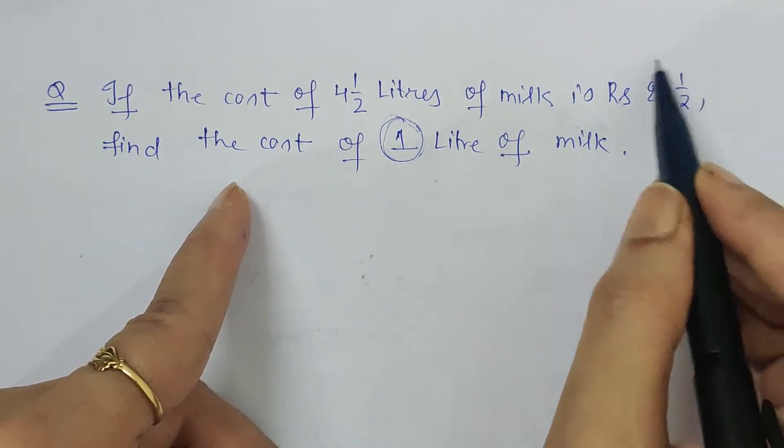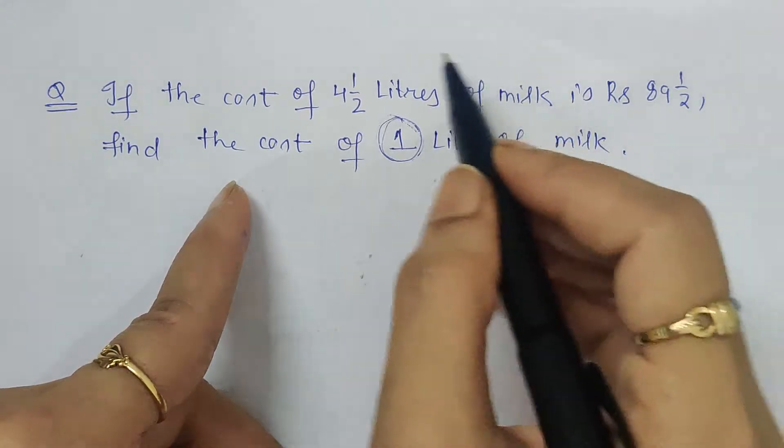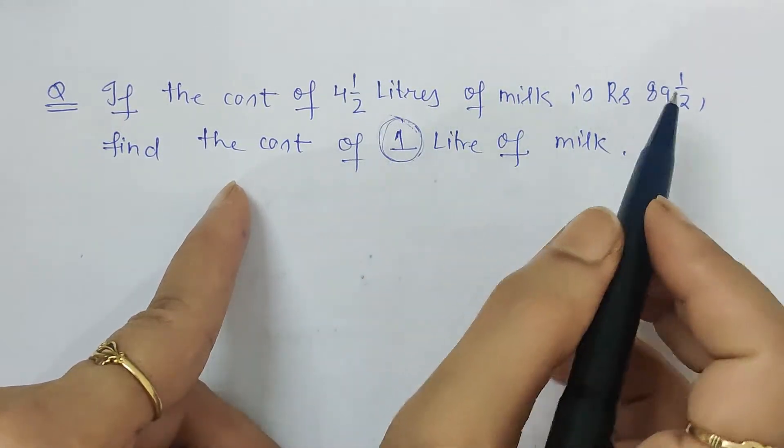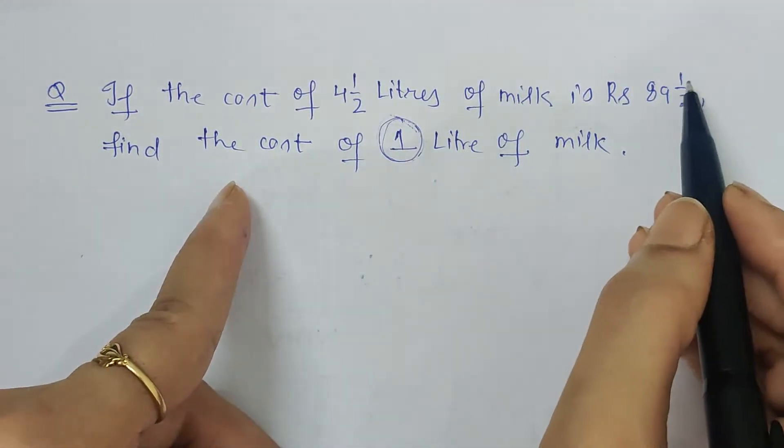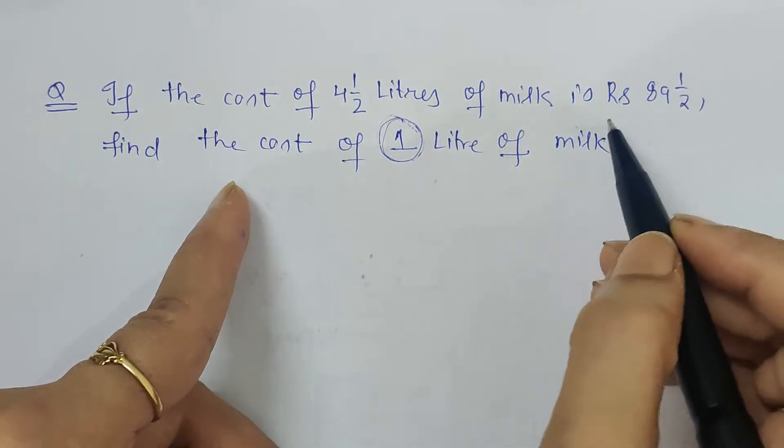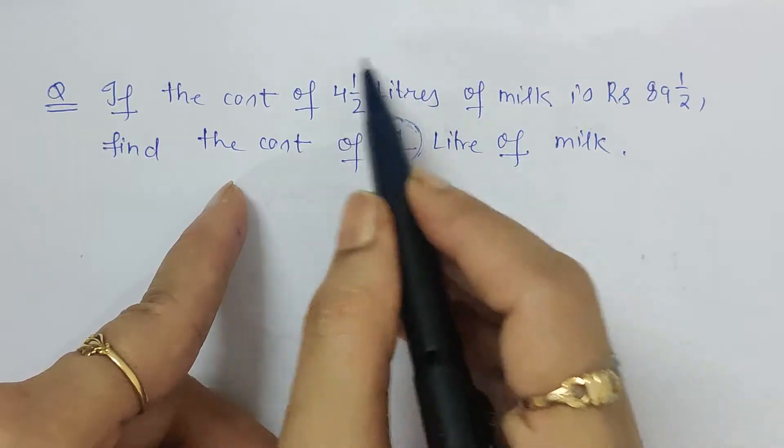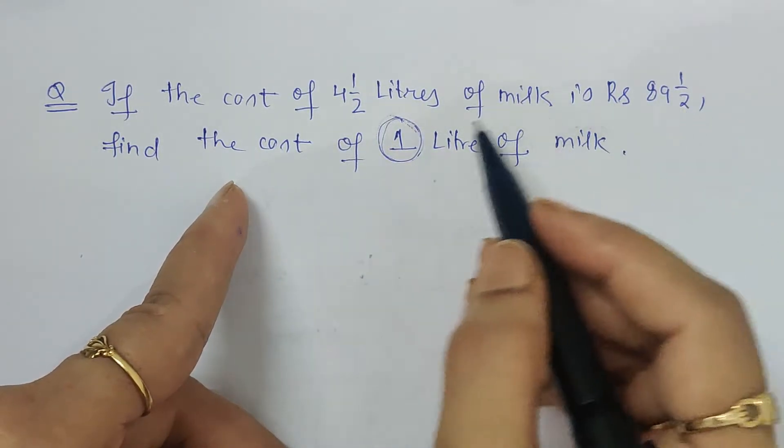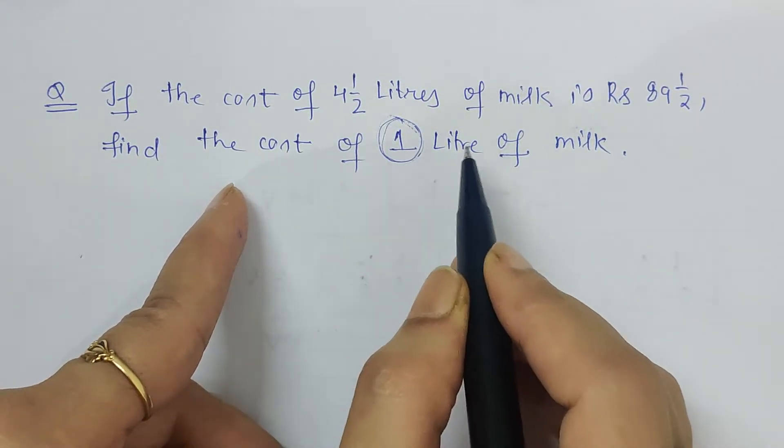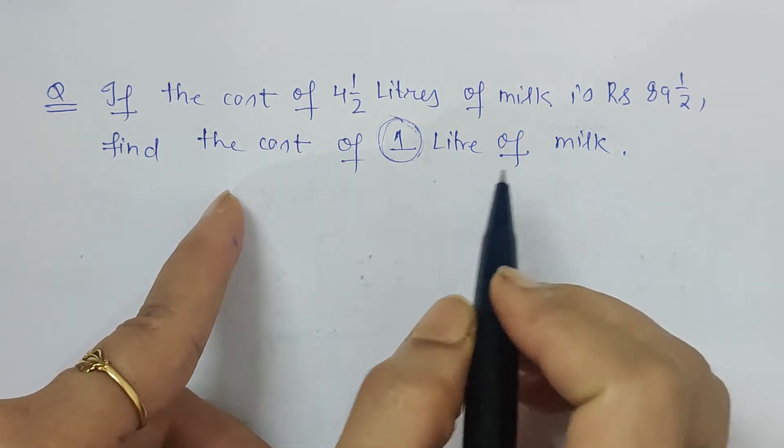We have to divide the total cost by the quantity that the total cost is given for. That will give the cost of one liter of milk in this case, or in general for any other case as well.